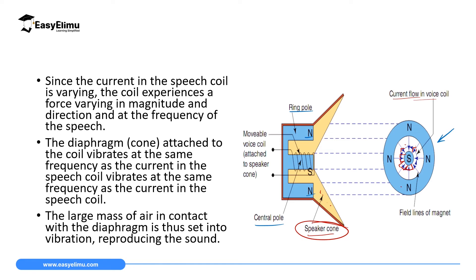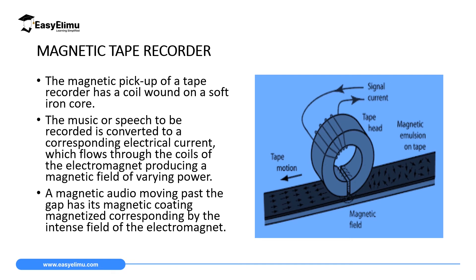The second application we will consider is a magnetic tape recorder. Some of the parts include the signal current, the tape motion, the tape head, the magnetic emulsion on the tape, and the magnetic field. These tape recorders are devices used to record or play back audio or video using a magnetic tape recording medium. These magnetic tape recorders were first discovered in Germany in about the 1930s and were brought to the world's attention after World War II.